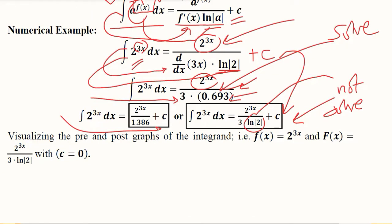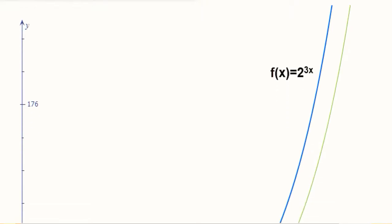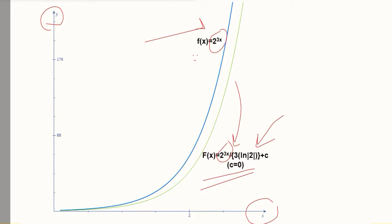Now we can see the pre and post graphs of the integrand. This is the function that we integrated and this was the result of it. C is considered equal to 0 just to keep things simple. So when we plot the graph: the blue colored line shows the original function and the green colored line shows the integrated function.